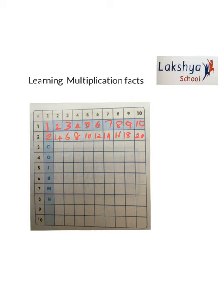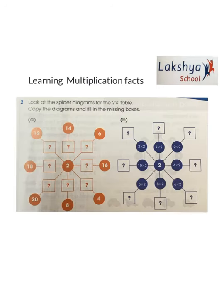Complete this table and be ready to solve question number one on page 14. Now look at the spider diagram for the two times table. Copy the diagram and fill in the missing blocks. We have a 2 in the centre and we need to complete the numbers in place of the question marks.